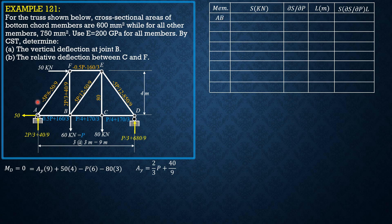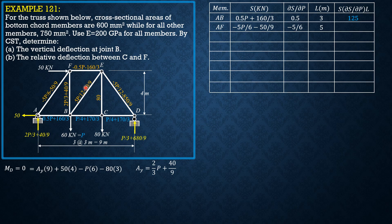Beginning with member AB: S equals 0.5P plus 160 over 3, partial of S with respect to P is 0.5, length is 3 m. With P equal to 60, the product is 125. Member AF: S equals negative 5P over 6 minus 50 over 9, partial derivative is negative 5 over 6, length is 5 m (3-4-5 member), and the product with P equal to 60 is 231.481.